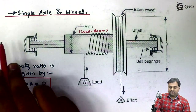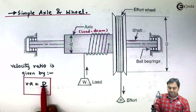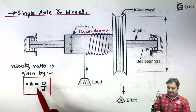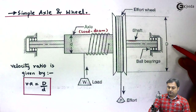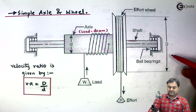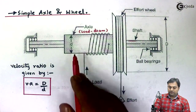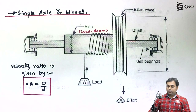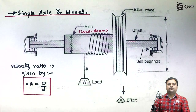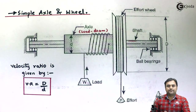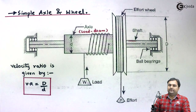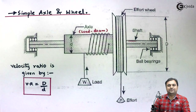The velocity ratio formula for simple axle and wheel is given by capital D upon small d, where capital D is the diameter of the effort wheel and small d is the diameter of the load drum or axle. This simple machine is used to lift heavy loads by applying comparatively less effort.